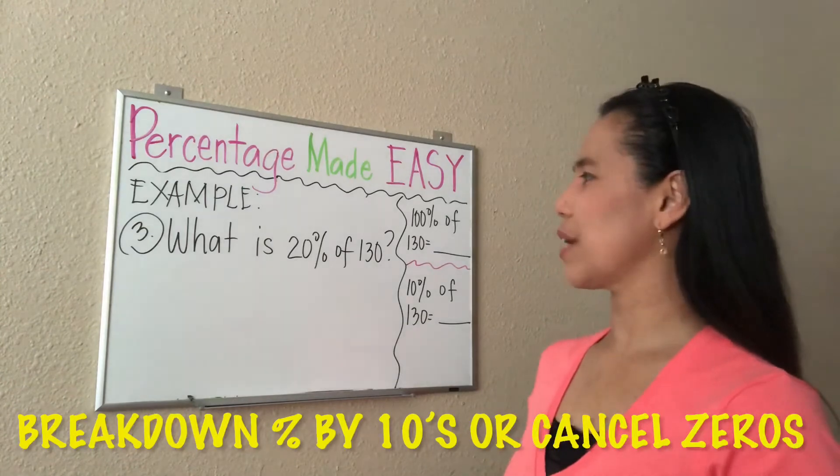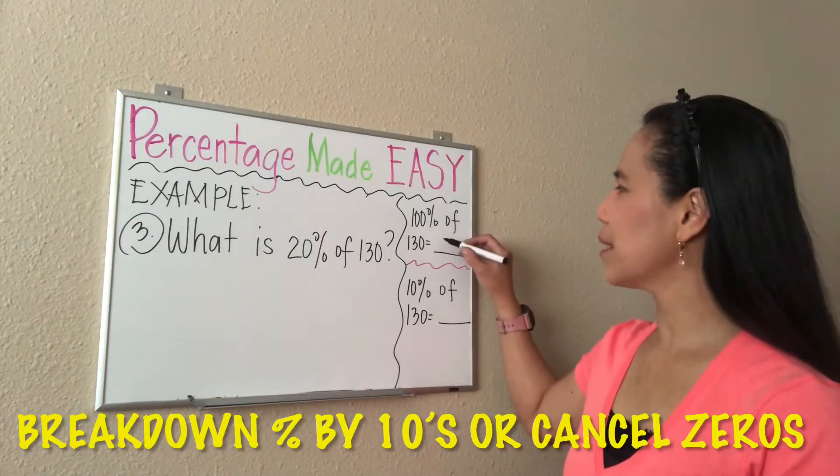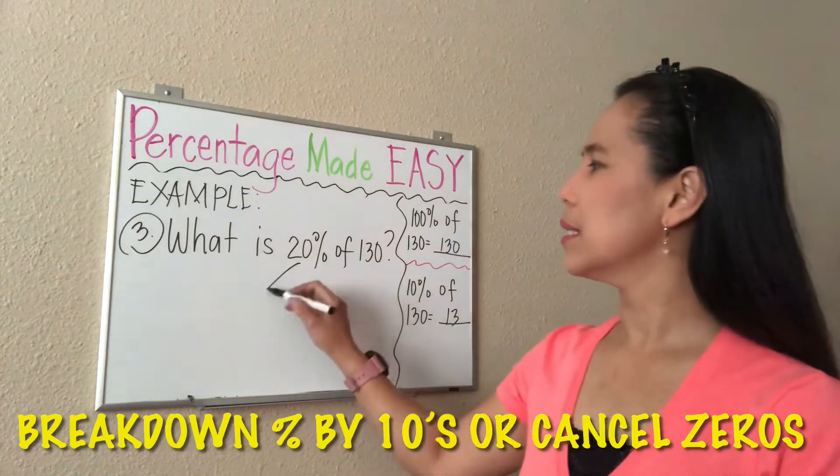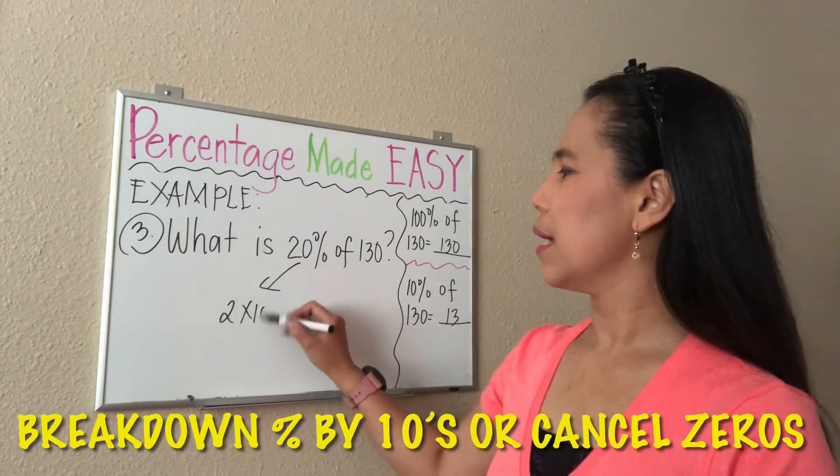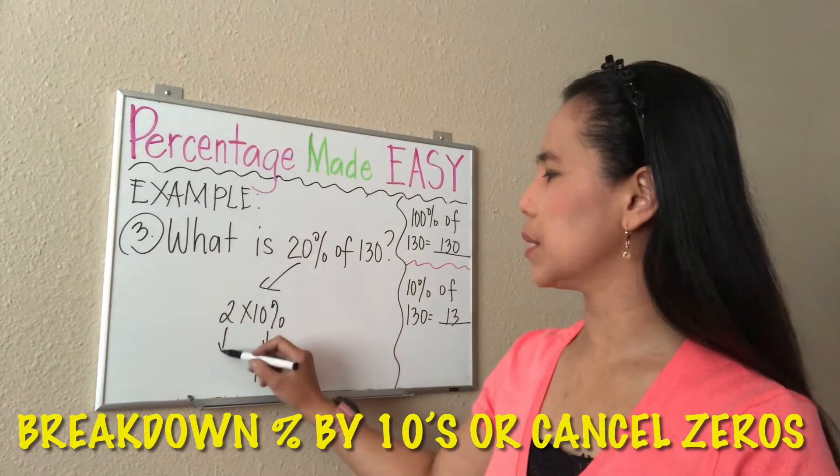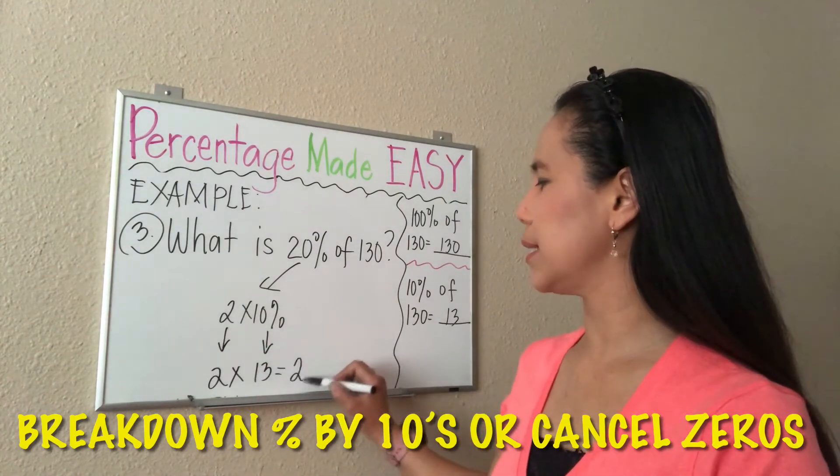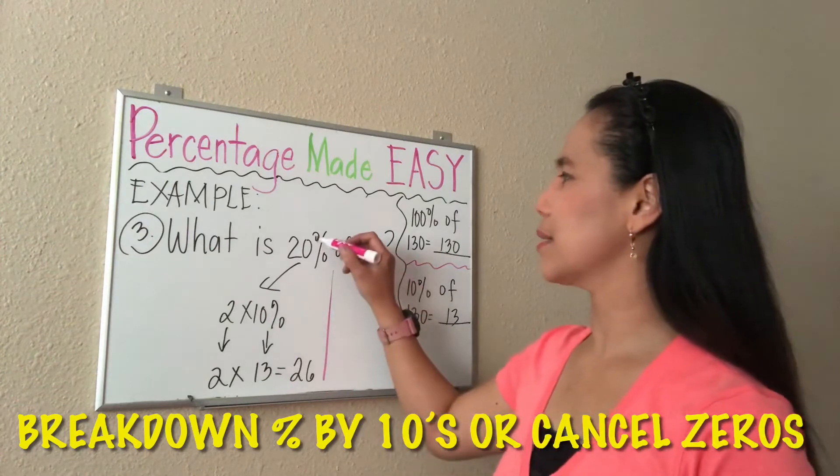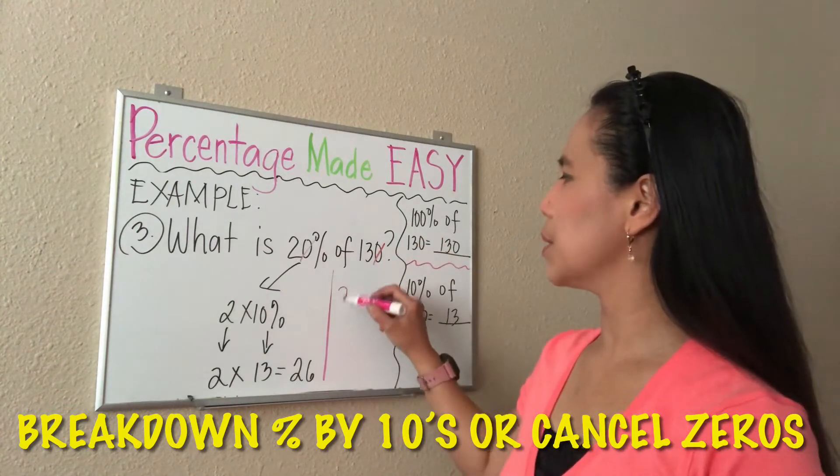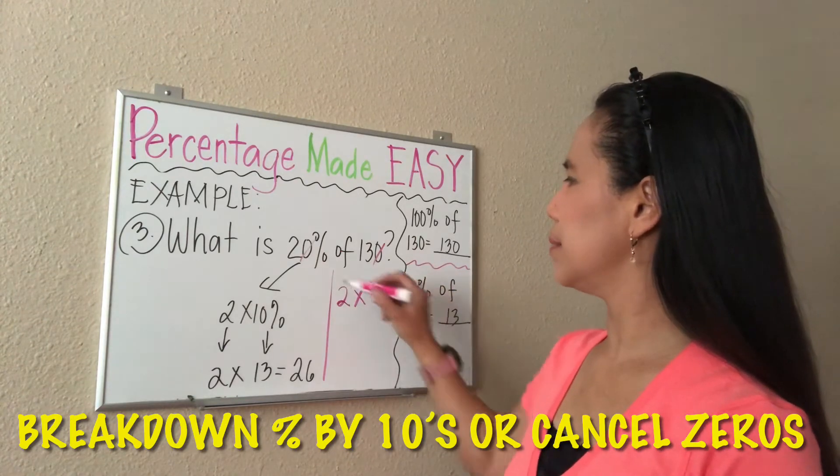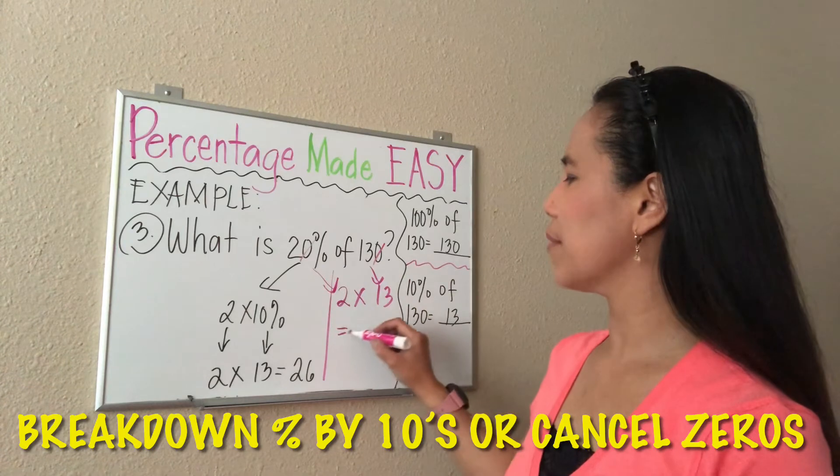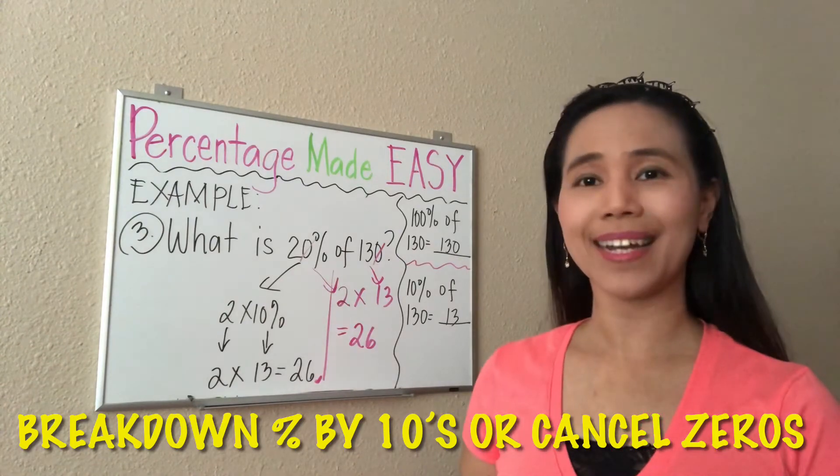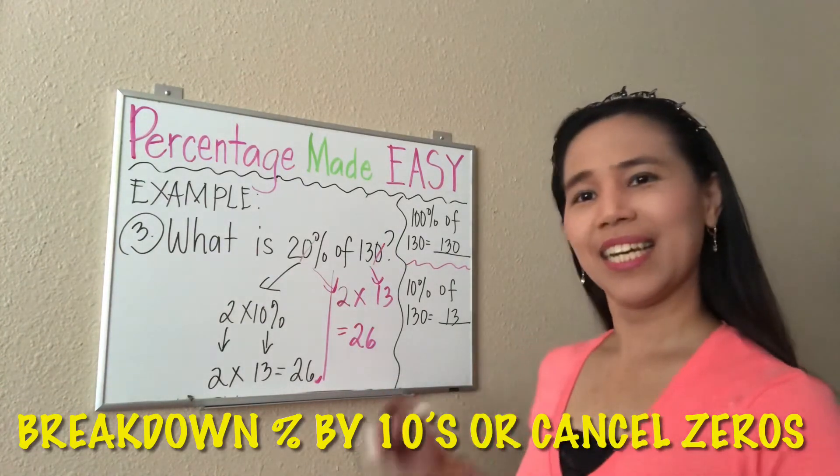All right, if you are ready, let's check your answer. Remember that 100% of 130 is 130, and 10% of it, which is 130 divided by 10, is 13. So 10% is 13, and then multiply that with 2—2 times 13 gives us 26. Applying the second strategy of just canceling zeros, we have 2 times 13, which also gives us 26. So the answer to what is 20% of 130 is equal to 26.